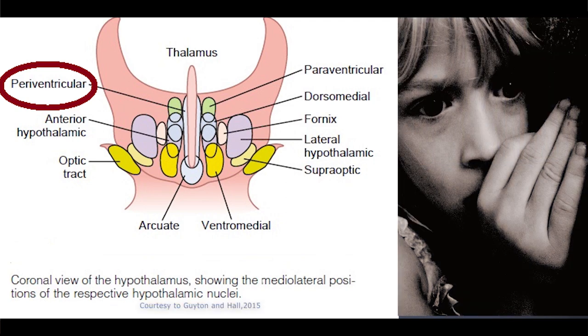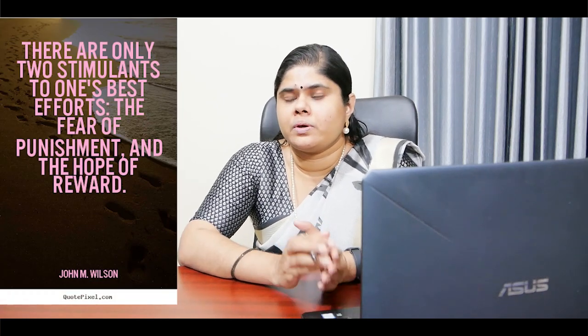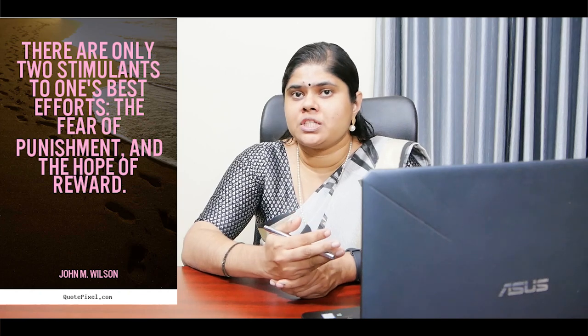Stimulation of a thin zone of periventricular nuclei located adjacent to the third ventricle, also called the central gray area of the mesencephalon continuous with the hypothalamus, usually leads to fear and punishment reactions. However, the major reward centers have been found along the course of the medial forebrain bundle, especially in the lateral and ventromedial nuclei of the hypothalamus. Almost everything we do is related in some way to reward or punishment — if an action is rewarding we continue it, and if punishing we cease it. The reward and punishment centers therefore constitute one of the most important controllers of our body activities, drives, and motivations.